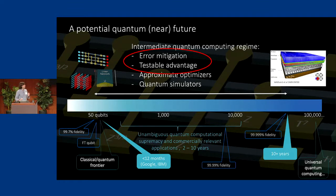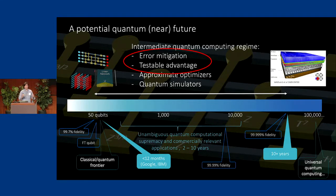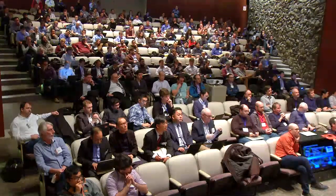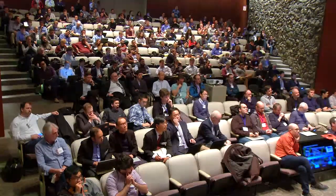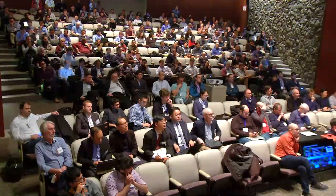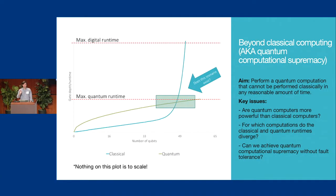I'll focus on two aspects of this. Over the next few years there's going to be a range of problems people focus on — things like approximate optimizers or quantum simulators. What I'm going to talk about is probably neither of those things, which are maybe a little less clear but a little easier to prove mathematically. I'm going to focus on error mitigation for classes of quantum circuits and talk about ways to develop a testable advantage over classical computers.